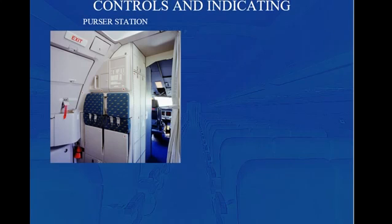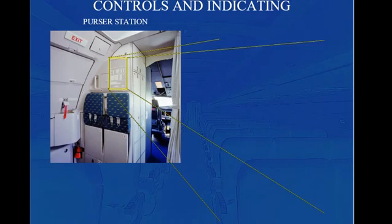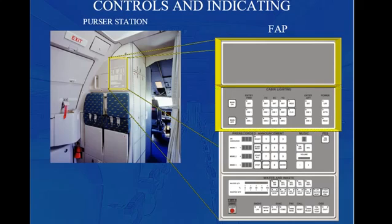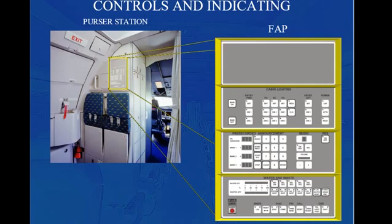The Forward Attendant Panel, FAP, is located at the Purser station. The FAP is divided into four parts: the Air Conditioning Panel (optional), the Light Panel, the Audio Panel, and the Water and Miscellaneous Panel.